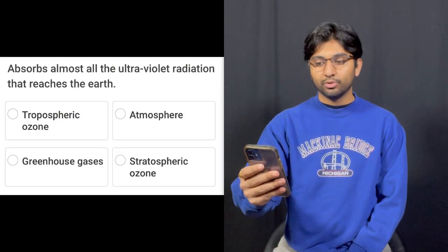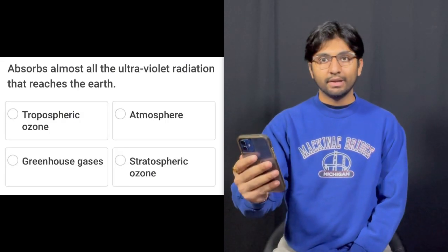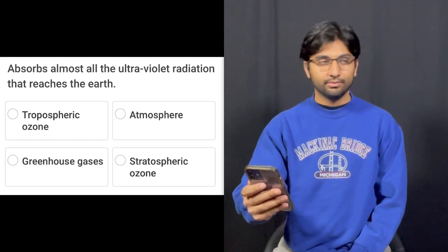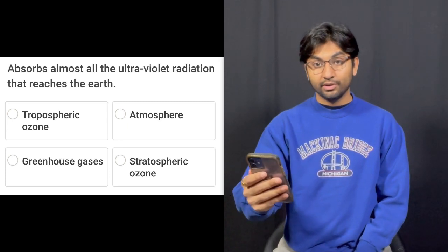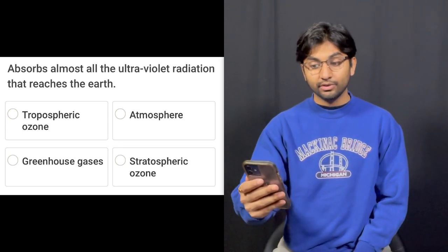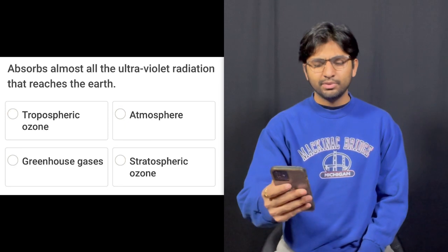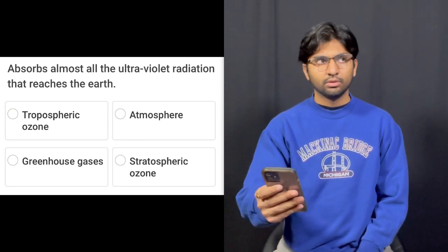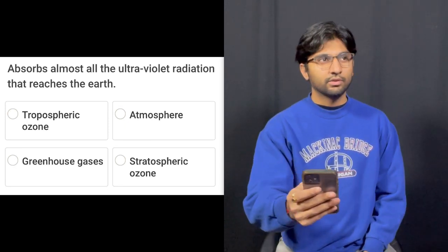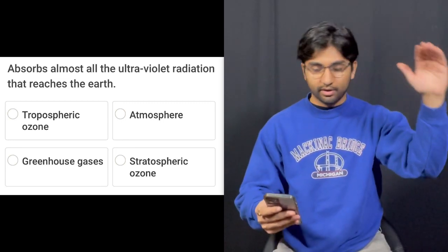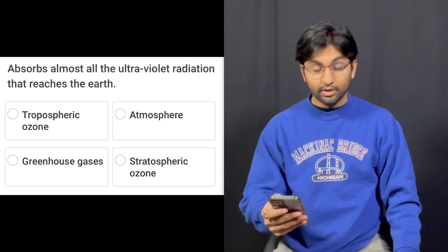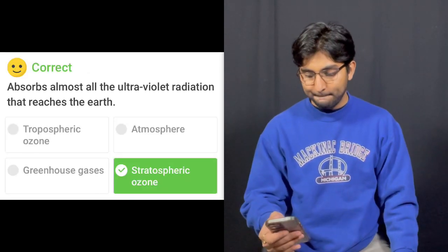Question number nine: Absorbs almost all the ultraviolet radiation that reaches the Earth. It's the ozone, but is it tropospheric ozone, atmosphere, greenhouse gases, or stratospheric ozone? I'm gonna say stratospheric ozone — tropospheric seems like it's closer to us, stratosphere seems like it's super far away. That's right. Stratospheric ozone!